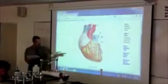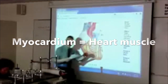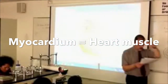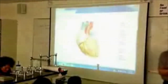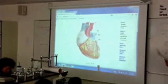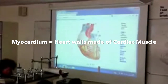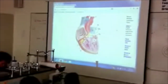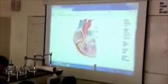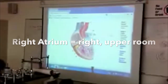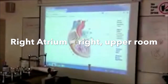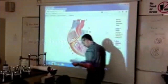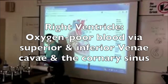What do you call the muscle of the heart? Myocardium. So the sac is the pericardium, the muscle is the myocardium. Roman numeral one — tell me what room that is. Atrium. Which one? Right atrium. Patient's right upper room.